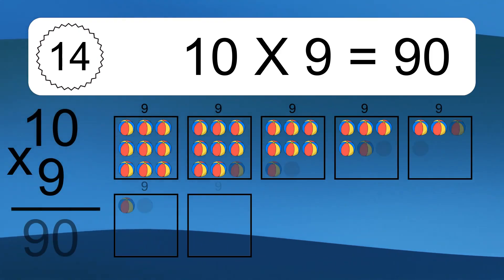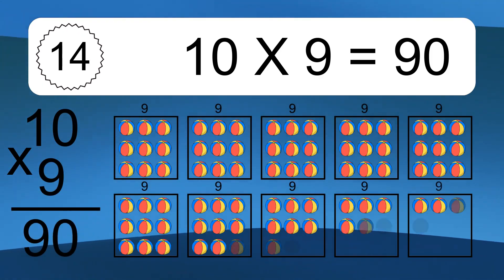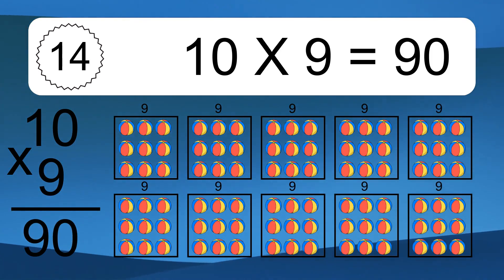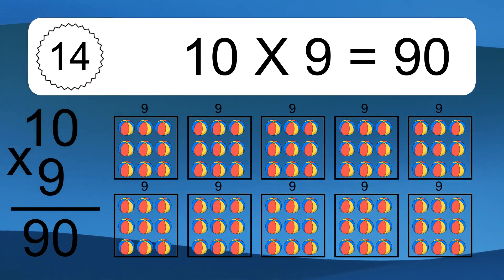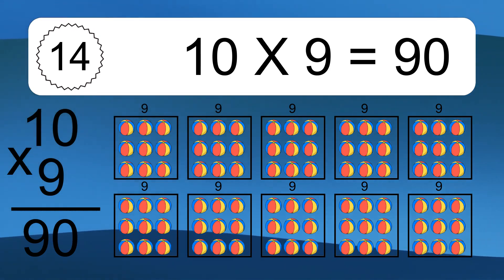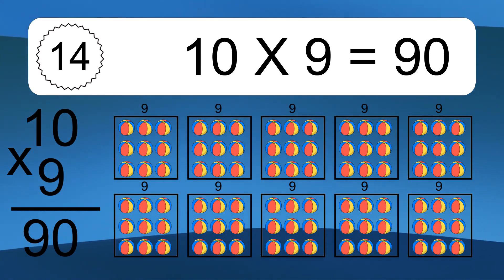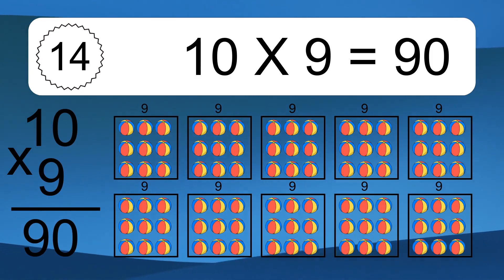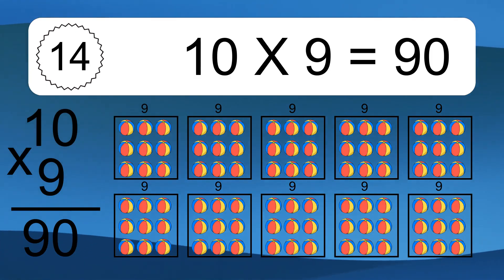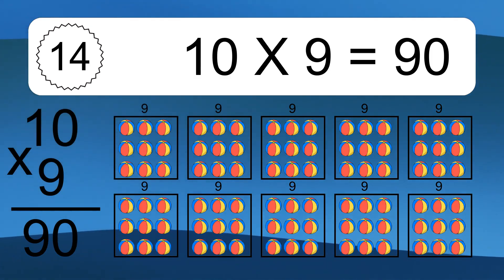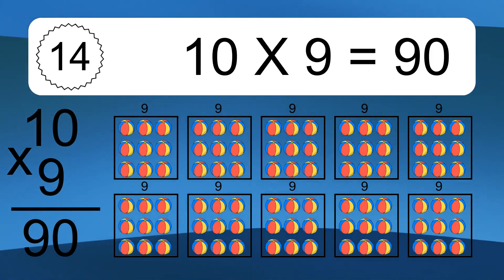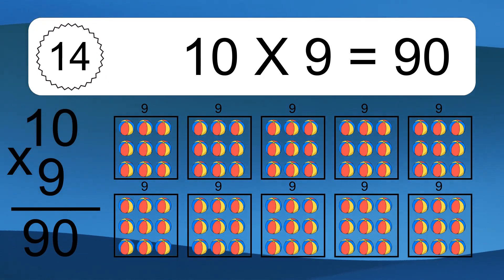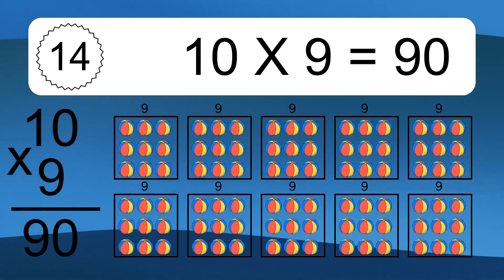10 times 9 equals 90. We have 10 boxes, and each box has 9 colorful balls inside. If you count all the balls in all the boxes together, you will have 10 times 9 balls. This equals 90 balls.